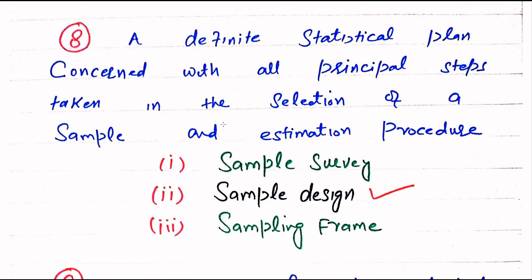Question number 8. A definite statistical plan concerned with all principal steps taken in the selection of a sample and estimation procedure — Sample survey, Sample design, or Sampling frame. The right choice is Sample design.